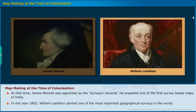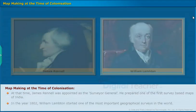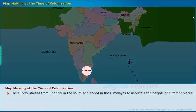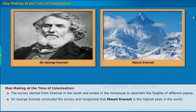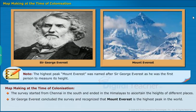In the year 1802, William Lambton started one of the most important geographical surveys in the world. The survey started from Chennai in the south and ended in the Himalayas to ascertain the heights of different places. Sir George Everest concluded the survey and recognized that Mount Everest is the highest peak in the world. Note: Mount Everest was named after Sir George Everest as he was the first person to measure its height.